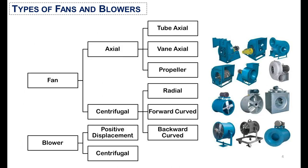Fans and blowers both have different kinds. Fans are further divided into axial fans and centrifugal fans. Axial fans are further divided into tube axial, vane axial, and propeller fan types. Centrifugal fans are divided into radial, forward curved, and backward curved fans. Blowers are divided into positive displacement blowers and centrifugal blowers.